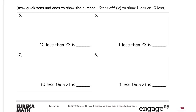Now we're drawing quick tens and ones to show the number, and we're crossing off to show one less or ten less. Ten less than twenty-three — draw the twenty-three first: ten, twenty, one, two, three. And I'm going to cross out one of the tens because it's ten less. See what's left is ten and three — thirteen. Now twenty-three again: ten, twenty, one, two, three. One less than twenty-three — cross off one, and see what's left: ten, twenty, twenty-one, twenty-two.